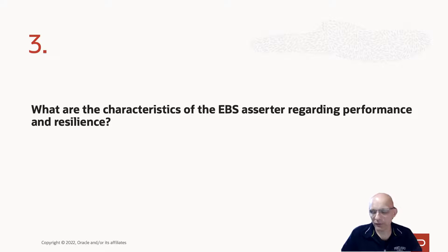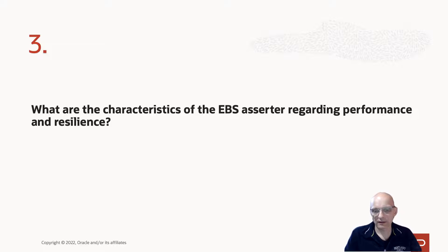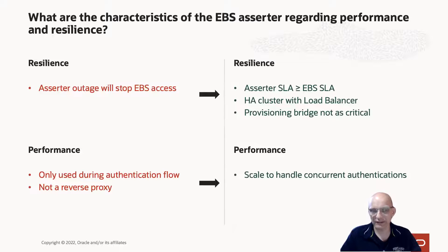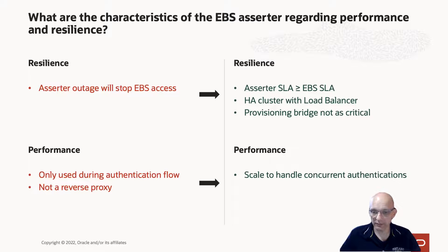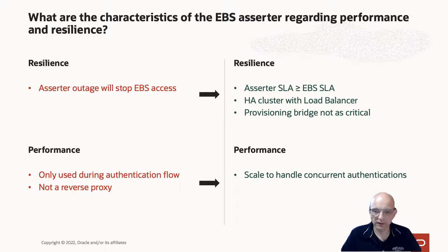Number three: now we're thinking about deploying the Assertor and potentially the Provisioning Bridge — what do I need to think about in terms of non-functional requirements? How performant and how resilient does it have to be? Let's look at resilience first and understand how the Assertor works. The user would try to access EBS; EBS, if they weren't already authenticated, would redirect them to the Assertor. The Assertor would redirect them to OCI IAM, which would authenticate the user. It would then send them back to the Assertor, which would create a session within EBS for that authenticated user and redirect them back to EBS. So if the Assertor were to go down, your users would lose access to EBS because they have no way of authenticating.